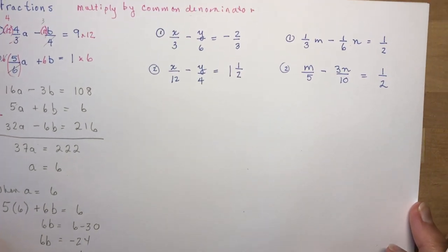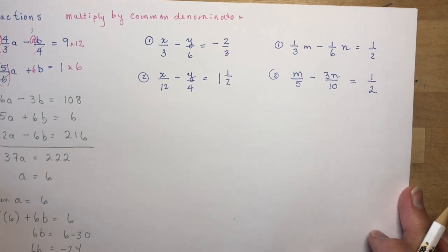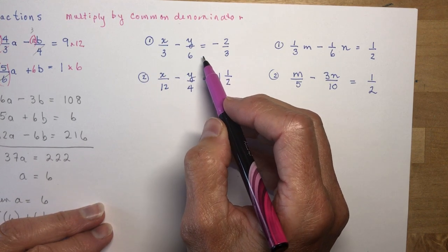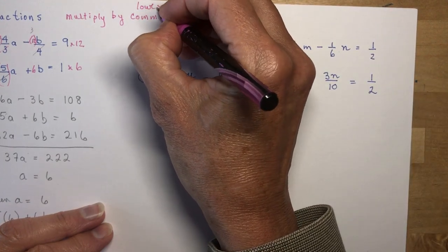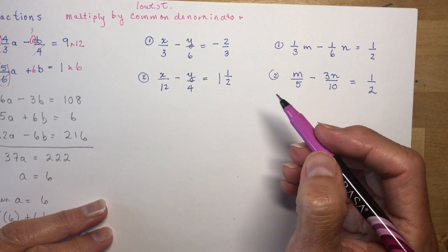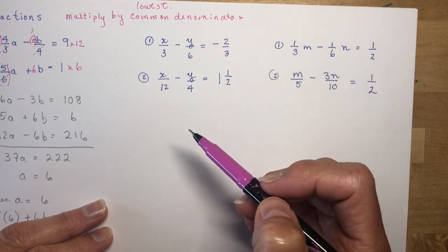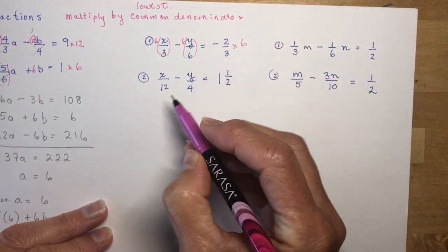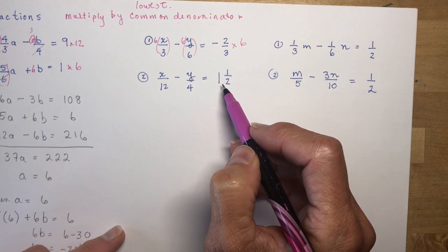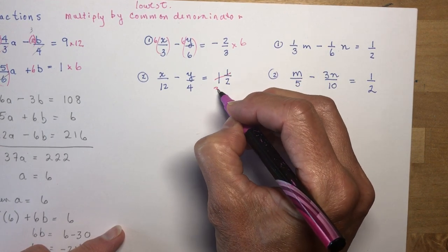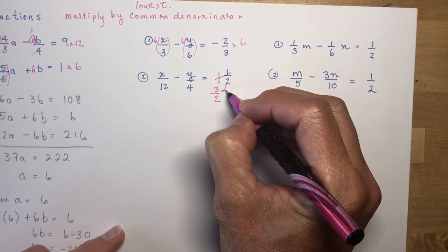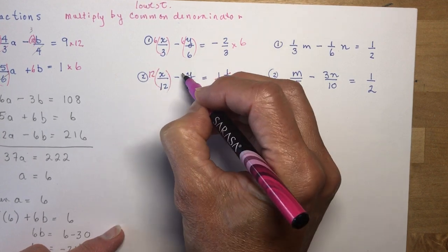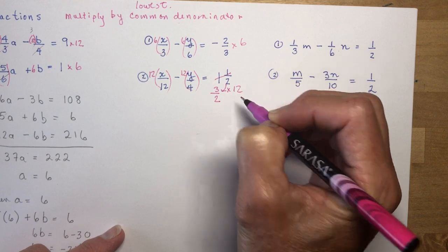You might want to pause, write down the questions, and try them yourself before coming back. For the next problem, look at the denominators. Don't multiply by 18 — use the lowest common denominator so you don't make more work. To get rid of denominators 3, 6, and 3, multiply everything by 6. For the second equation, change 1 and a half to the improper fraction 3 over 2. The denominators in equation 2 are 12, 4, and 2, so the LCD is 12 — multiply each term by 12.